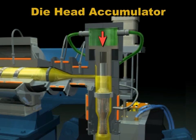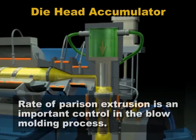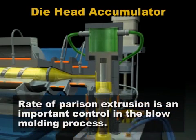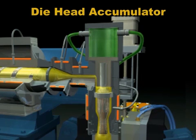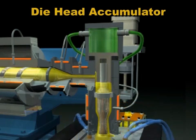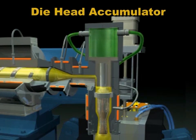The rate of parison extrusion is an important control in the blow molding process. Varying this rate during parison formation is called programming, and it's covered in lesson seven.